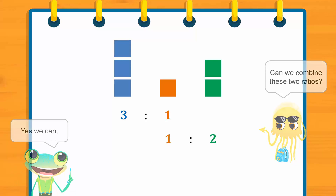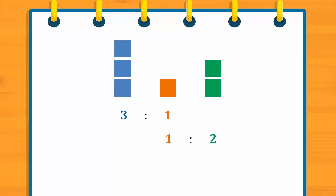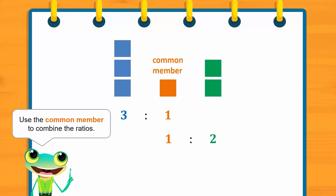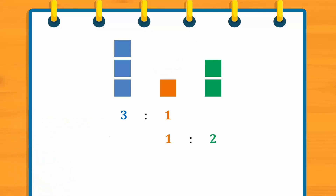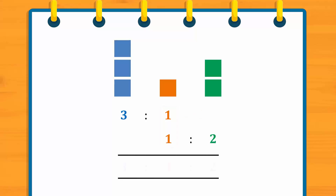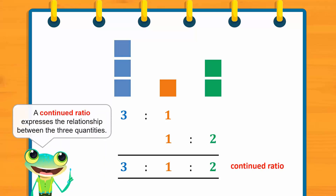Yes, we can. Observe that the orange box is a common element of both ratios — it is also known as the common member of the two ratios. We will use the common member to combine the ratios. The common member of both ratios is written on top of one another, making it easier to see how the ratios are combined. Since the numbers corresponding to the common member are equal, we can combine the two ratios. The ratio 3 to 1 to 2 is known as a continued ratio — a continued ratio expresses the relationship between three quantities.